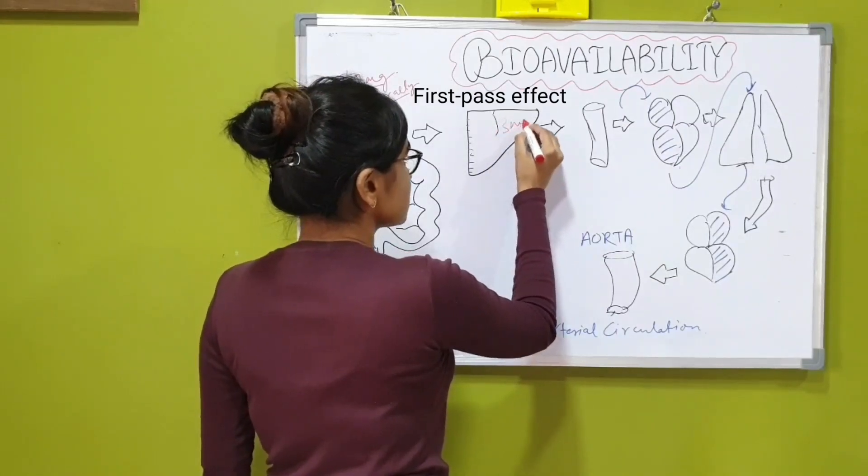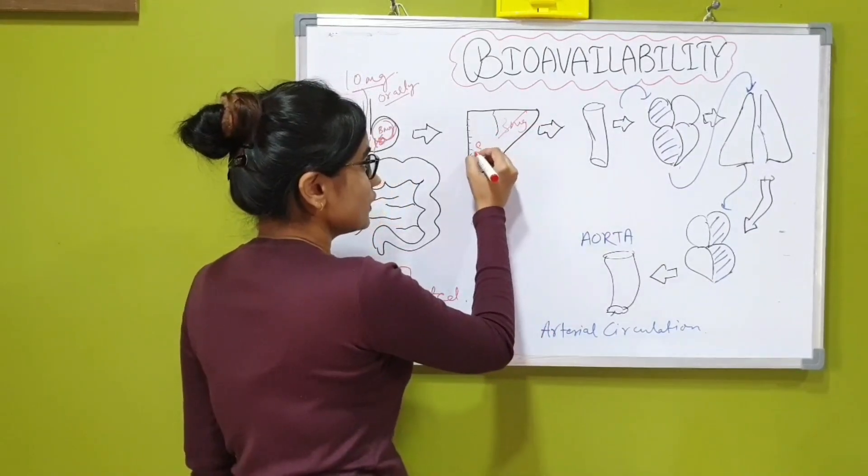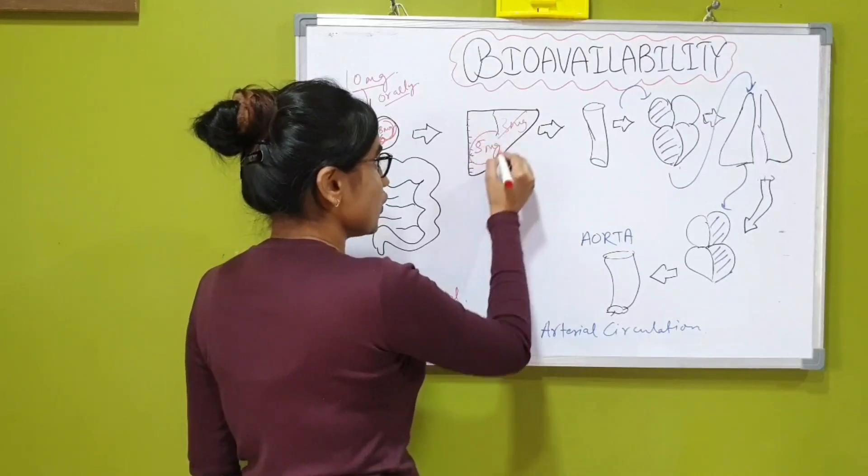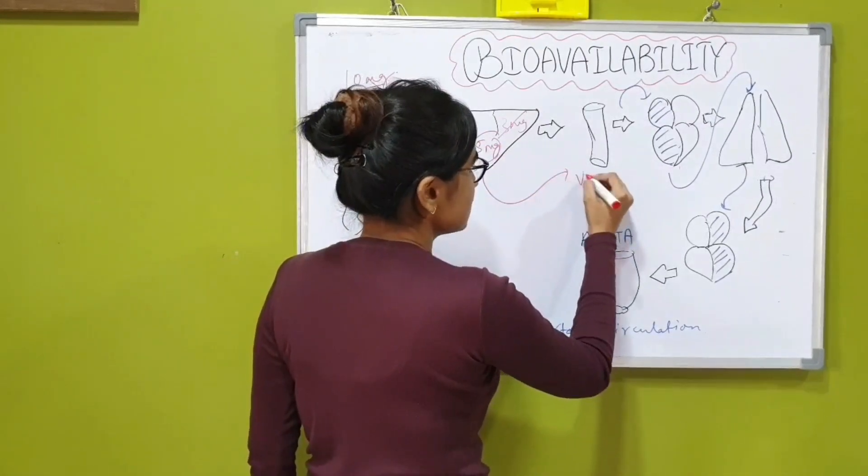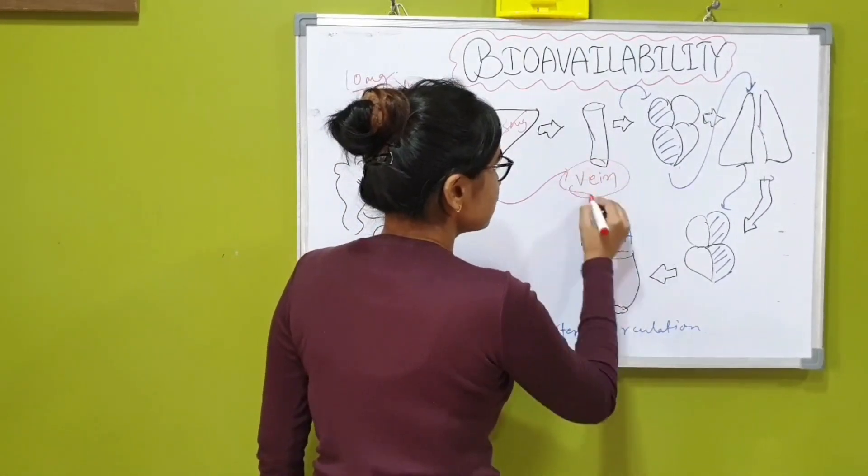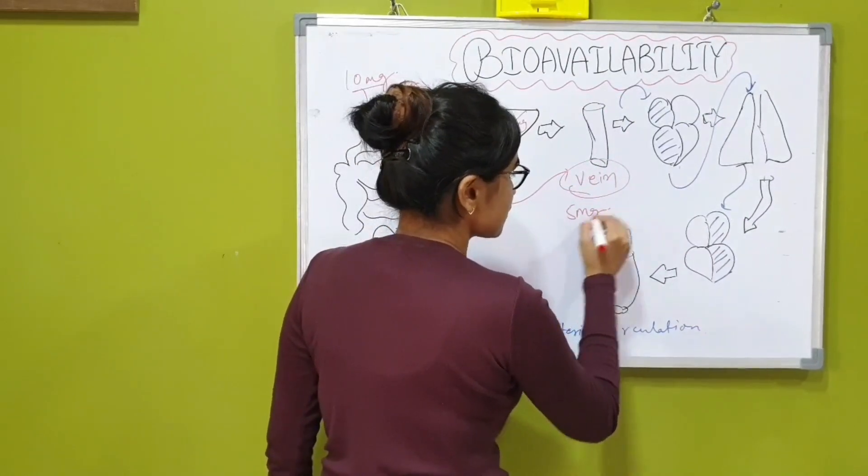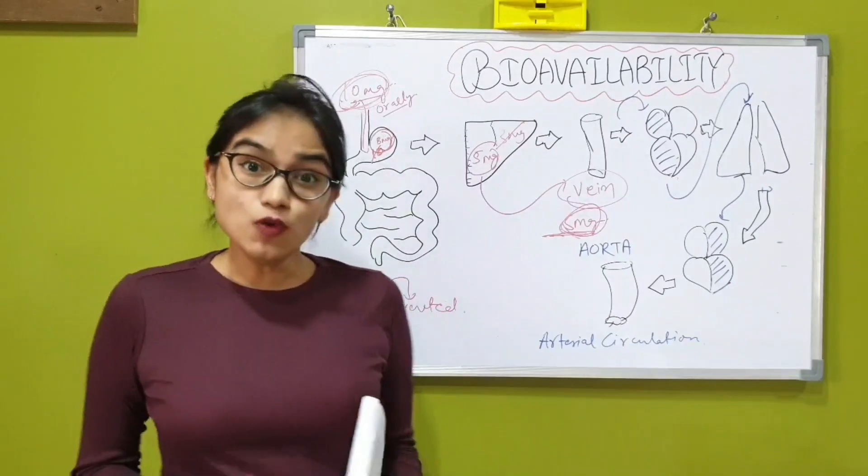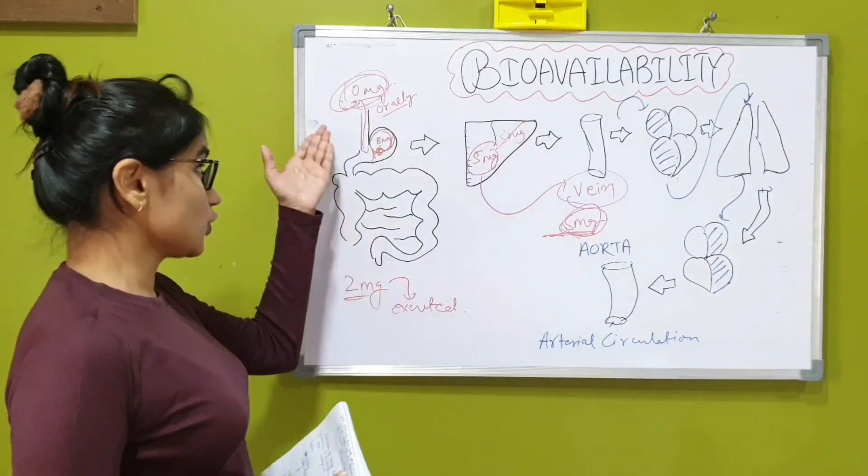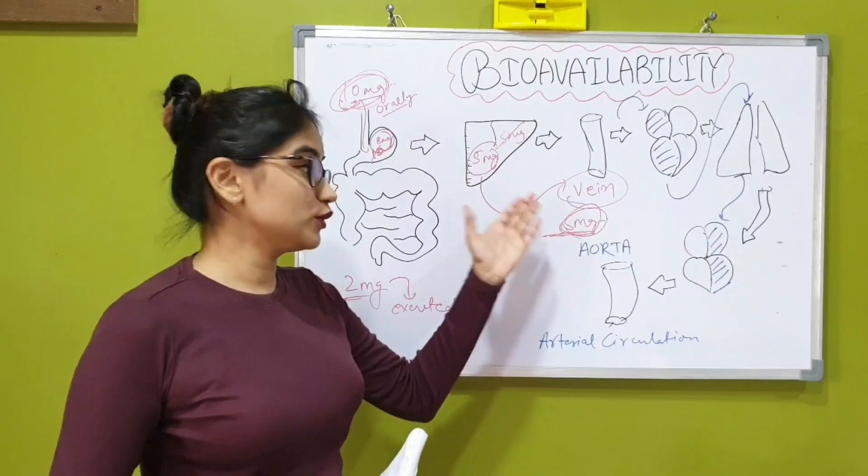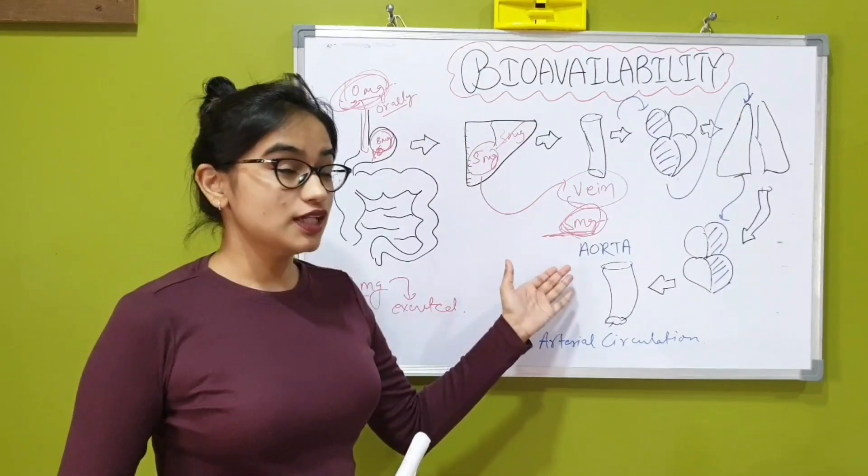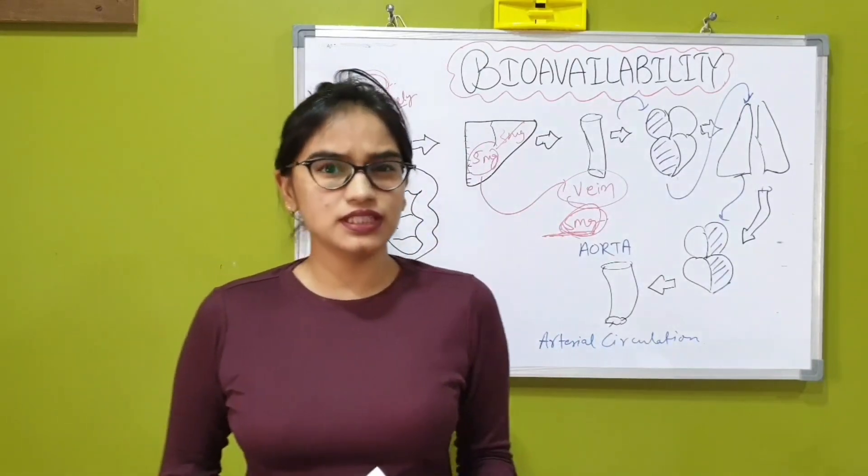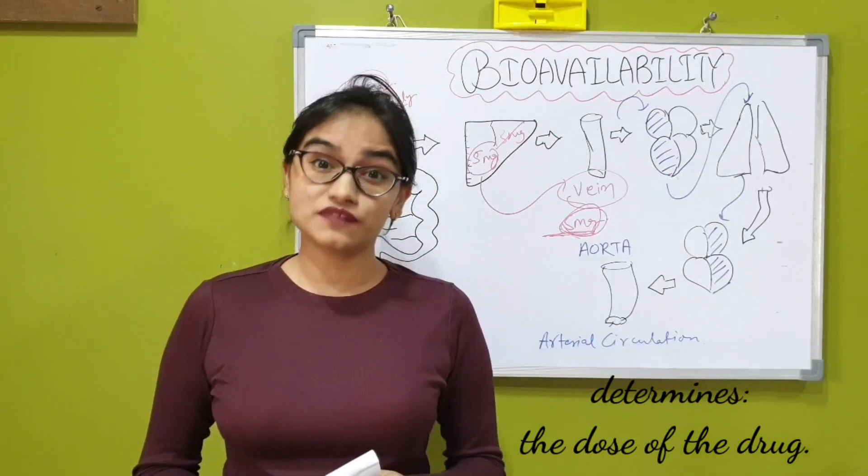Out of this 8 mg, 3 mg gets metabolized. So only 5 mg is left which goes into the venous circulation and hence only 5 mg of the total drug is available for the systemic action. Now we know how much drug we took and how much drug is available for the action to be produced. Therefore, bioavailability helps us determine the dose of the drug.